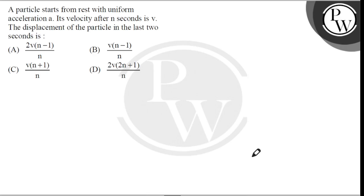Hello, let's read the question. A particle starts from rest with uniform acceleration a. Its velocity after n seconds is v. The displacement of the particle in the last two seconds is what? If the initial velocity is zero, then the final velocity v equals zero plus a times n.